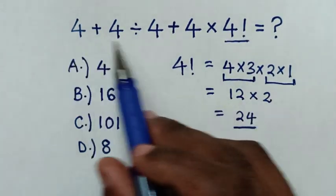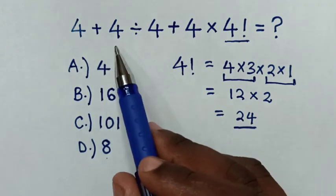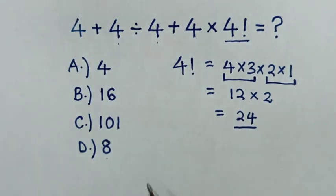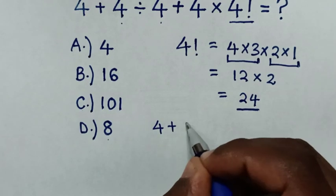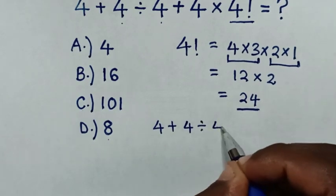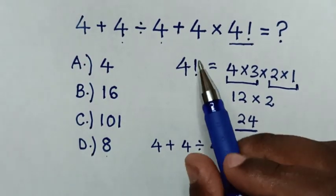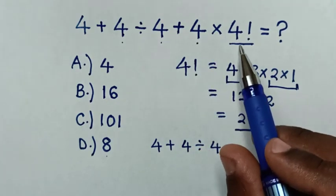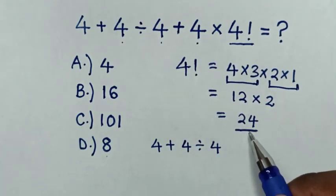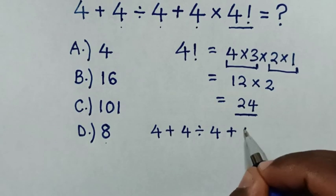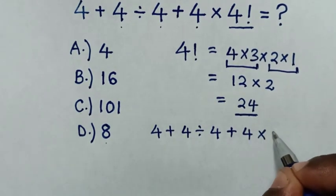Then, back into this problem, which is 4 plus 4 divided by 4, plus 4 times 4 factorial, which is 24.